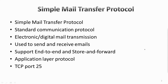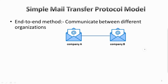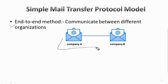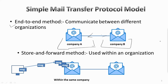The SMTP protocol model has two methods: the end-to-end method and the store-and-forward method. The end-to-end method is used to communicate between different organizations, while the store-and-forward method is used within an organization.